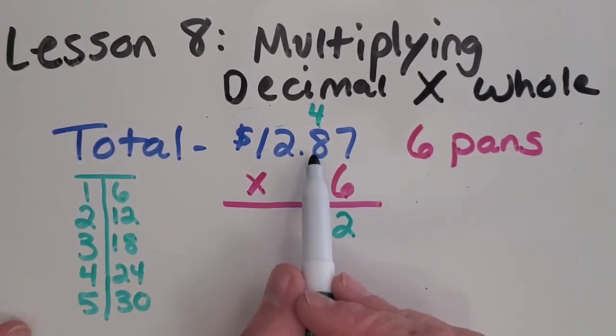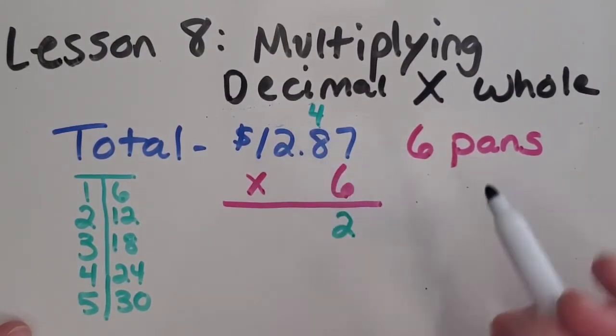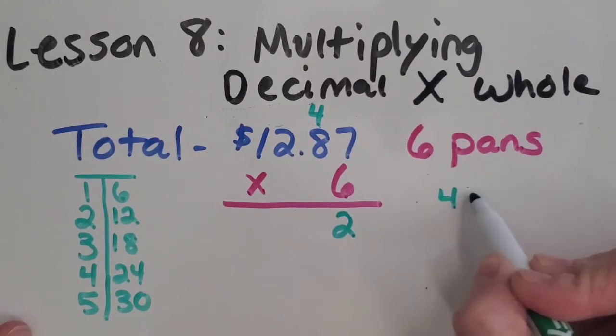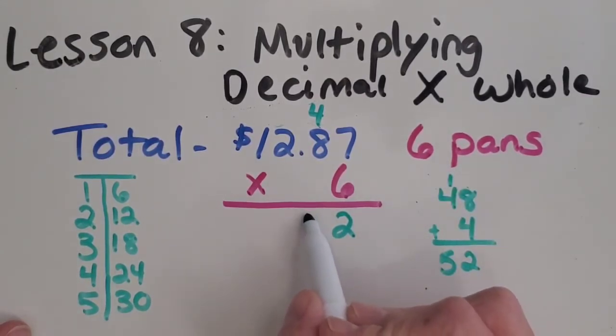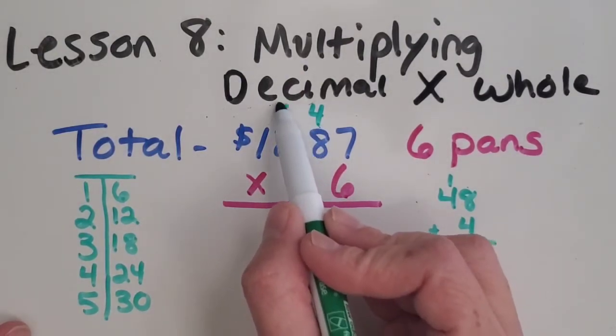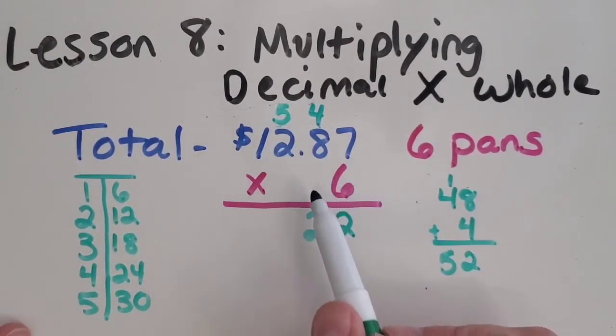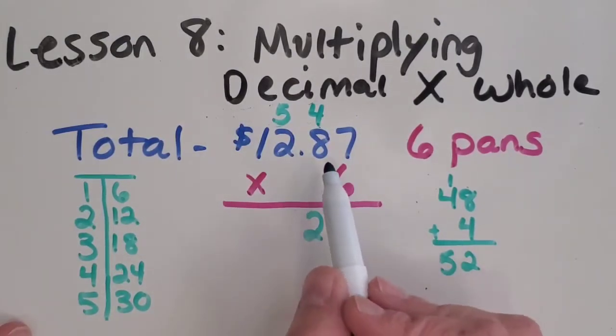All right, eight times six is 48 plus the four. That seems like a little bit of a tricky problem. So I'm going to write it down over here. There's nothing wrong with kind of jotting down a little note, just to make sure you don't make a mistake in your head. So eight plus four is 12. 52. So I'm going to write that down with regrouping. It's okay. That decimal there, just ignore it for now. We can keep regrouping just like we normally would when we're working with whole numbers.